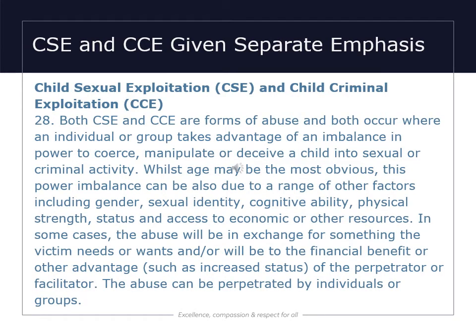Sexual exploitation and child criminal exploitation are both given separate emphasis in the new guidance. Both CSE and CCE are forms of abuse and both occur where an individual or group takes advantage of an imbalance in power to coerce, manipulate or deceive a child into sexual or criminal activity. This power imbalance can be due to a range of factors including age, gender, sexual identity, cognitive ability, physical strength, status, and access to economic or other resources. In some cases the abuse will be in exchange for something the victim needs or wants, and/or to the financial or other advantage of the perpetrator or facilitator. The abuse can be perpetrated by individuals or groups.